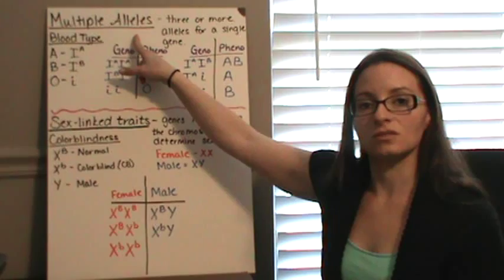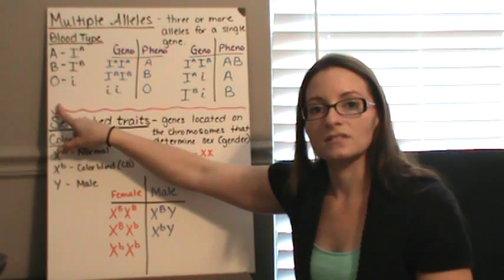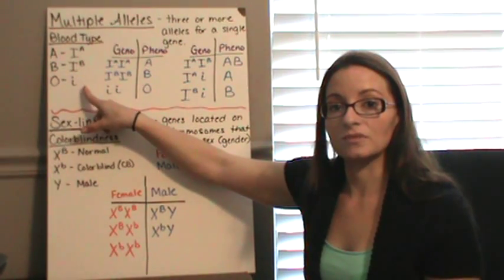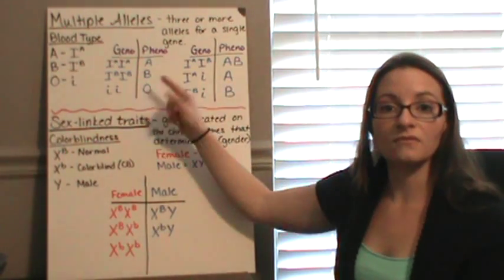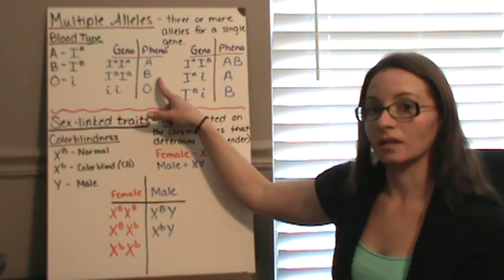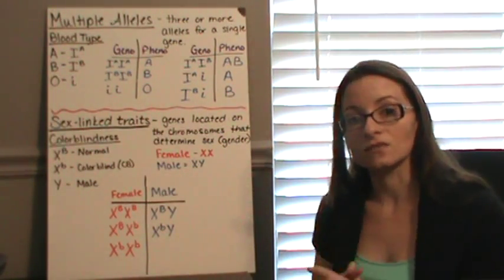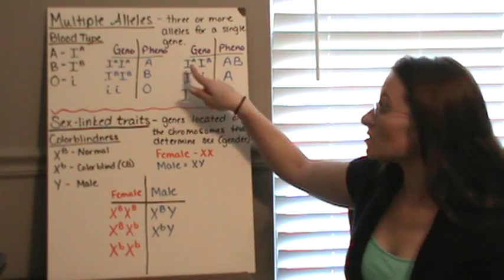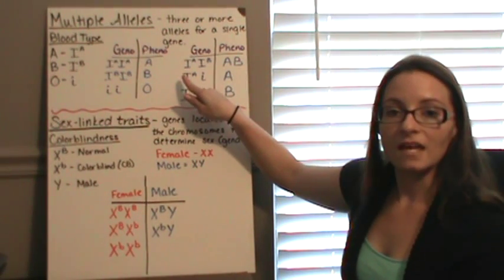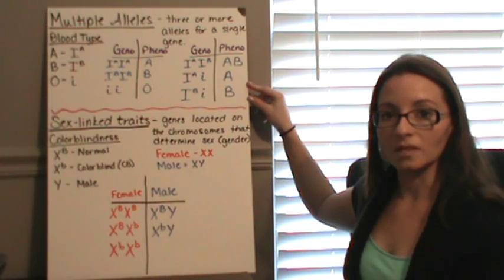Blood type is a multiple allele trait. We have an allele for type A, type B, and type O blood. Type A and B are both dominant and co-dominant over type O, so type O is recessive. Homozygous genotypes: two A alleles give type A, two B alleles give type B, two O alleles give type O. For heterozygous combinations: an A and B allele gives type AB blood because they are co-dominant. An A and O allele gives type A blood, and a B and O allele gives type B blood, since A and B are both dominant over O.